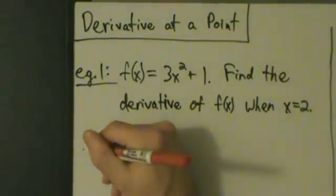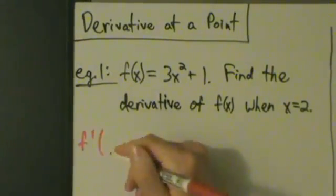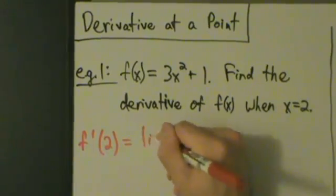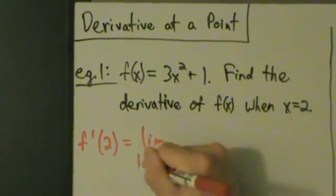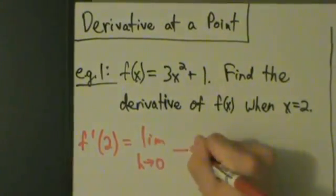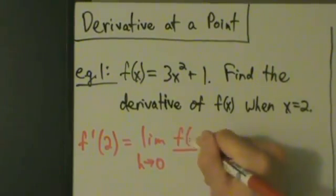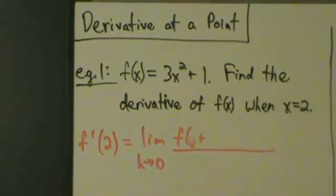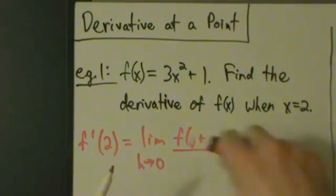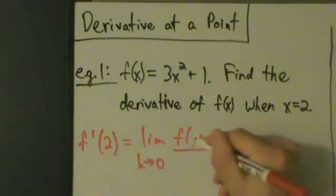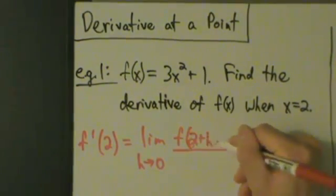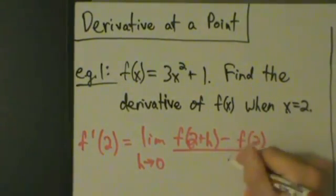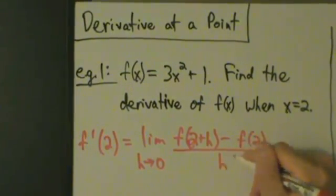So that's f prime of 2, which equals the limit as h goes to 0 of f of 2 plus h minus f of 2, all divided by h.